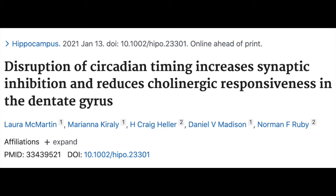Your paper discusses two specific effects of disrupting circadian rhythm in Siberian hamsters: synaptic inhibition, and something called cholinergic responsiveness in the dentate gyrus. The dentate gyrus is a sub-region of the hippocampus. It's really important because a lot of the sensory information that forms the basis of memories comes into the dentate. The dentate has a filtering function — it filters out extraneous stimuli and decides what's important, and it also directs traffic. If you don't filter out the noise, the information is ambiguous — like trying to take a photograph through a dirty window.